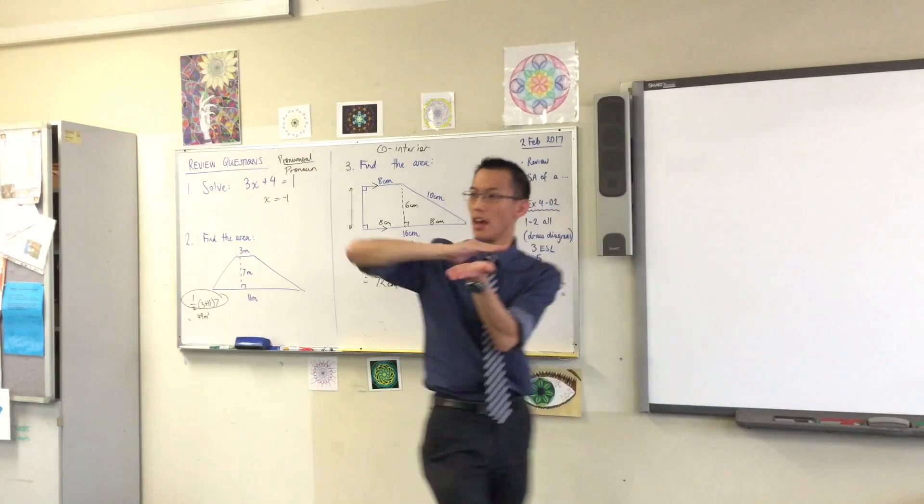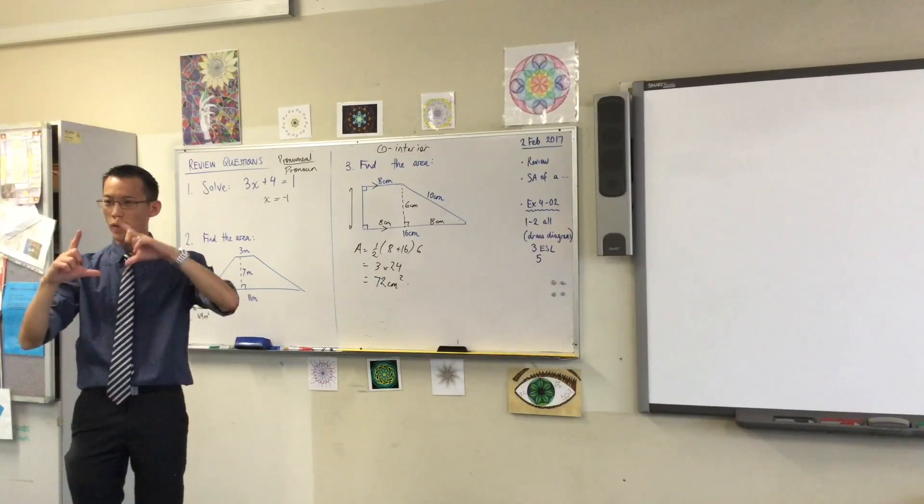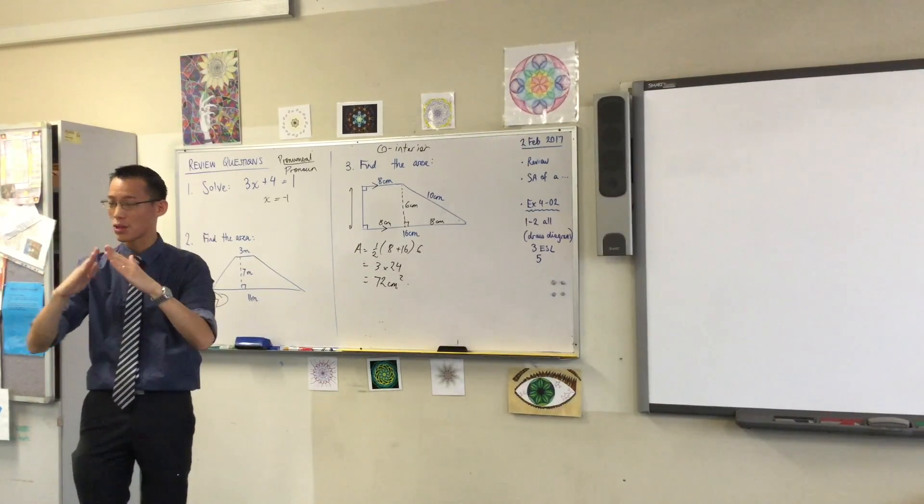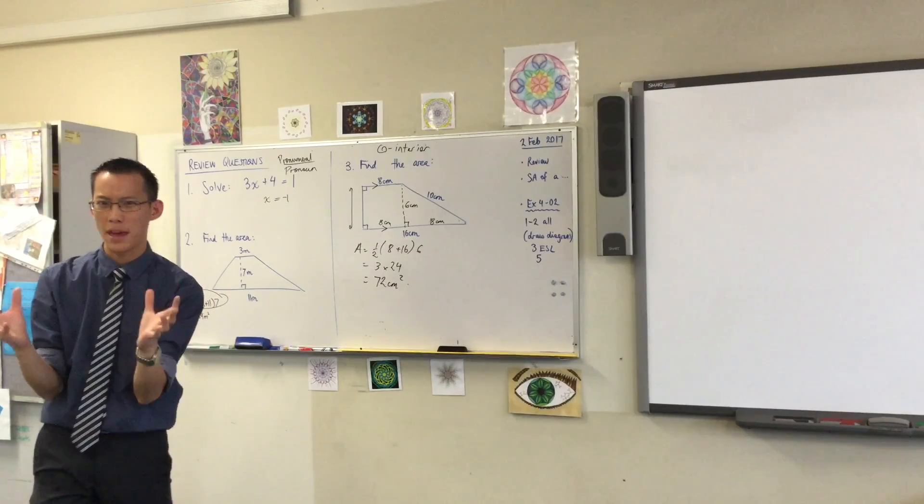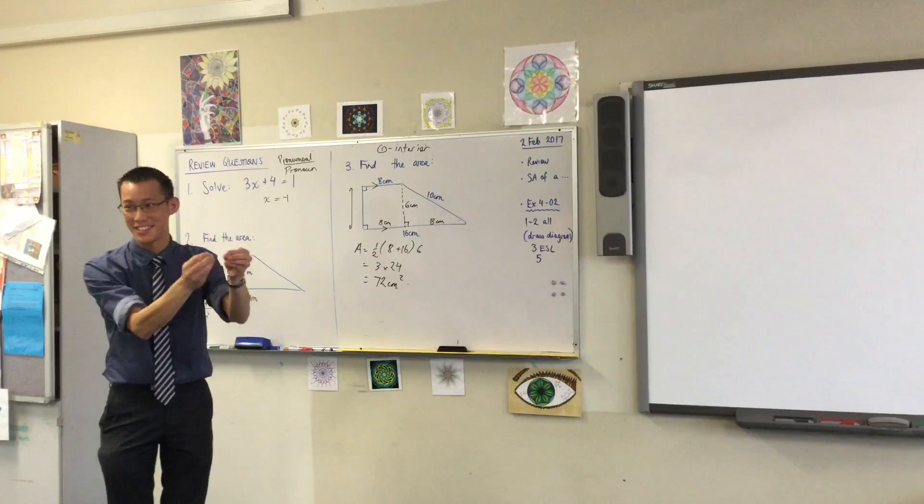Now for prisms we said you've got a cross-section. It's always the same, but not only is it always the same, they're always going to be like squares or rectangles or triangles. They're all going to start with P, all those shapes, straight edges, all that kind of thing. Polygons. That's fantastic. We put that in our definition, didn't we?